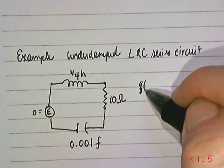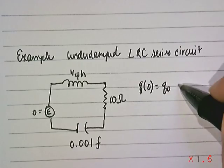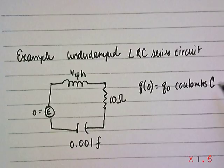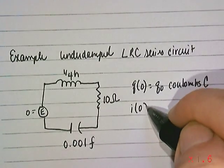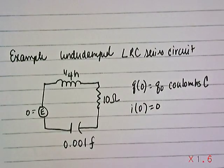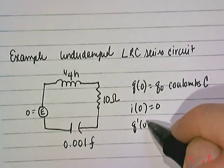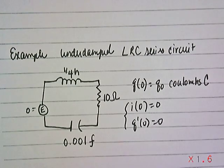You could assume the initial charge is some value of Q0. The units would be Coulombs, typically represented by capital C. And we'll assume that the initial current is zero as well, which is the derivative, recall, of Q. So that's another way of saying Q prime of zero is zero. Same thing. These are the same. All right.